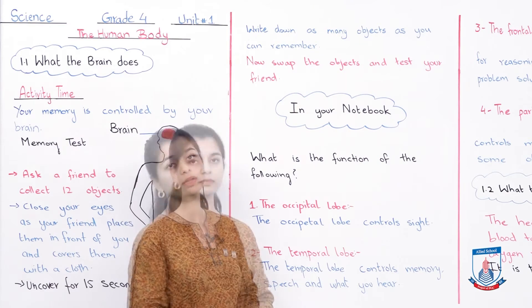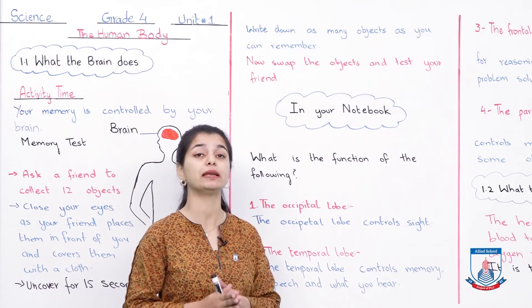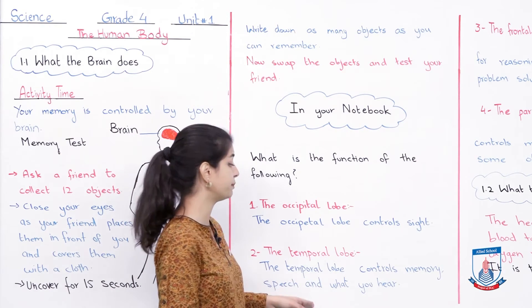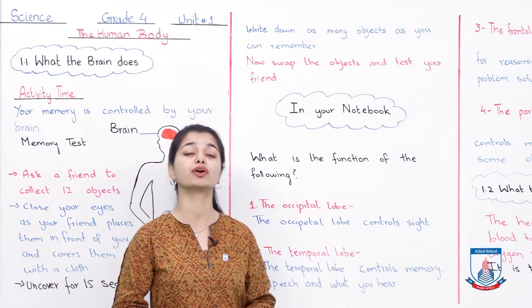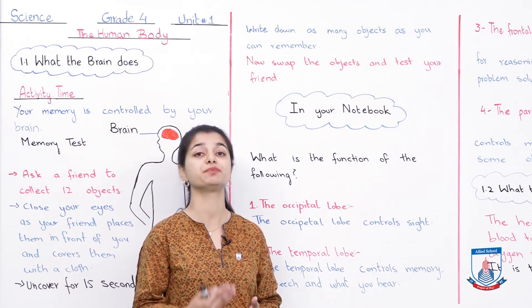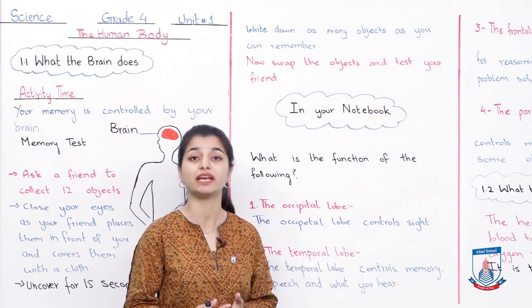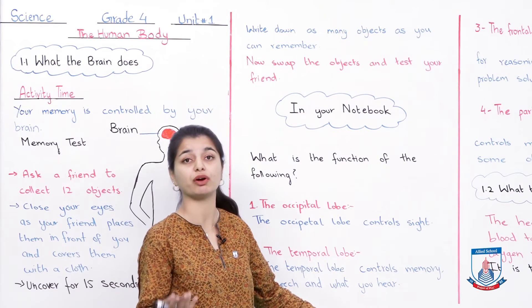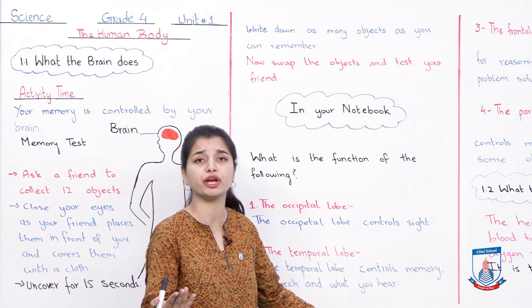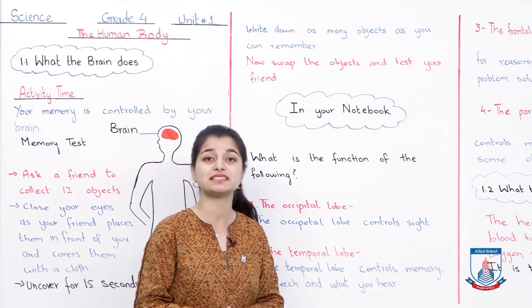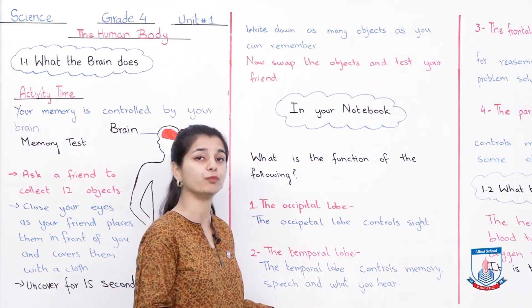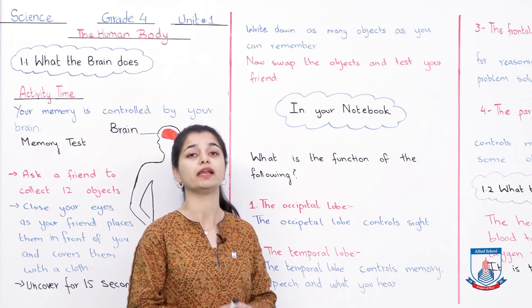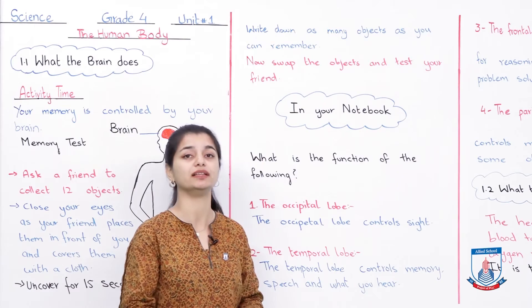The next part is the temporal lobe. The temporal lobe controls memory, speech and what you hear. What you hear is controlled by your temporal lobe. It is very important for your senses of hearing as well as speaking.